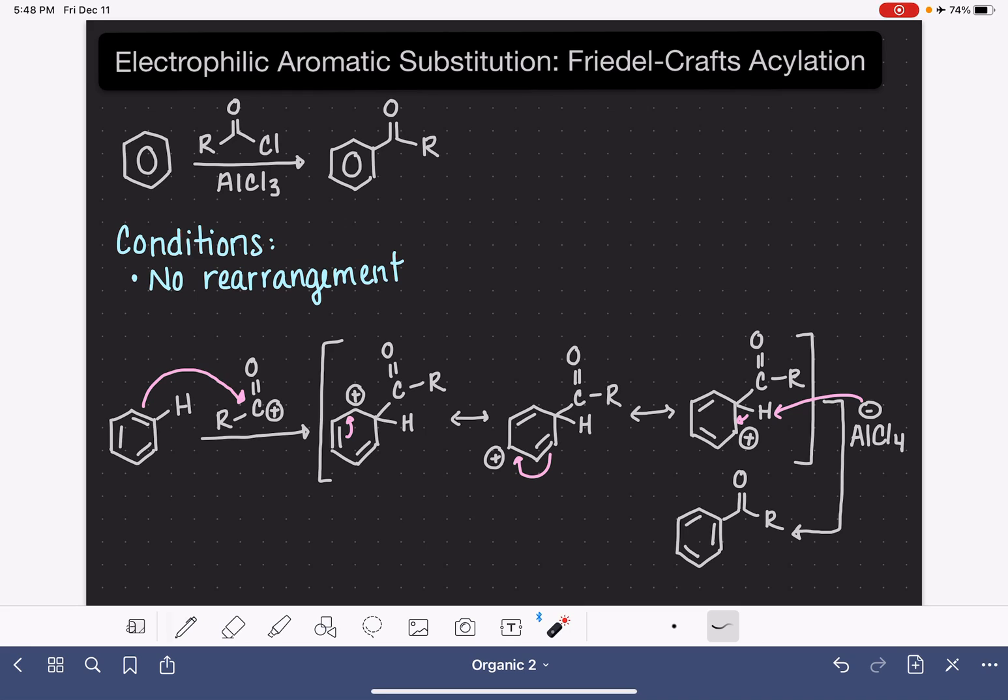And in this reaction, our sigma complex and the resonance structures are the same as what we would normally expect, just seeing that positive charge delocalized around the ring. At the end, we use the same base, AlCl4-, as is used in Friedel-Crafts alkylation.